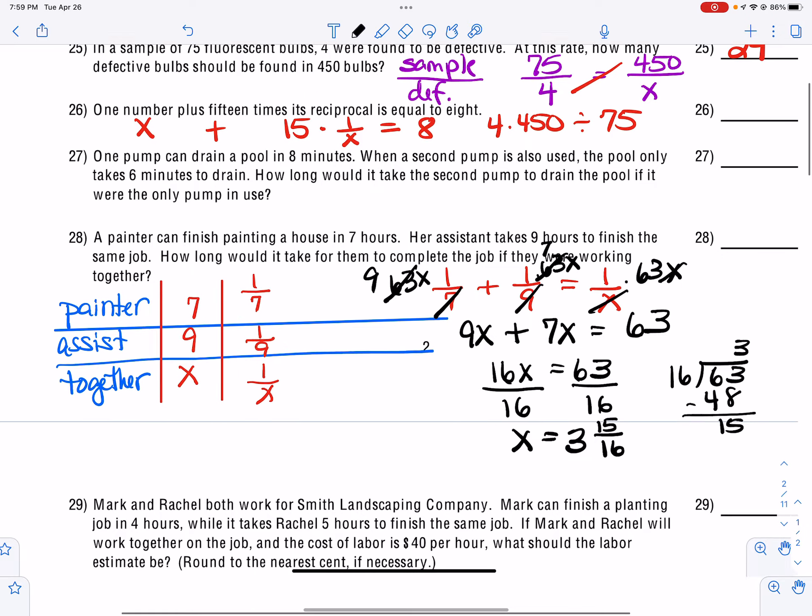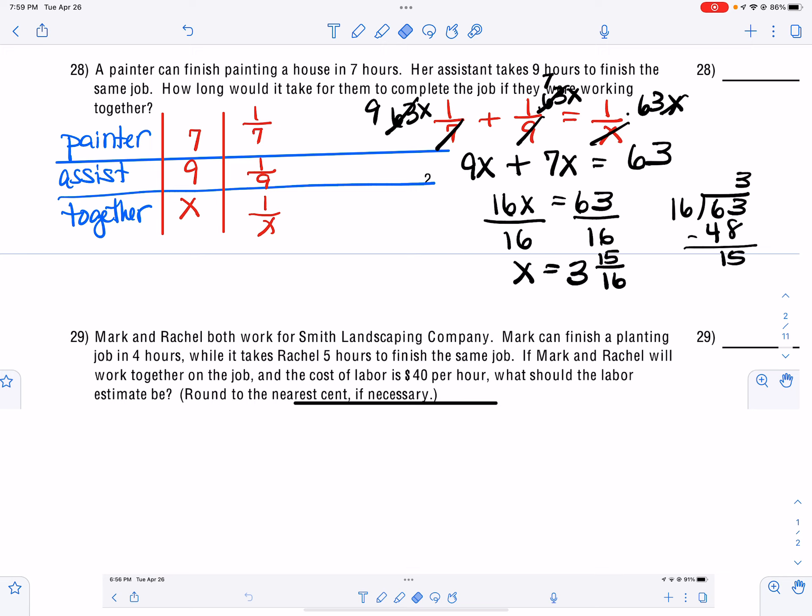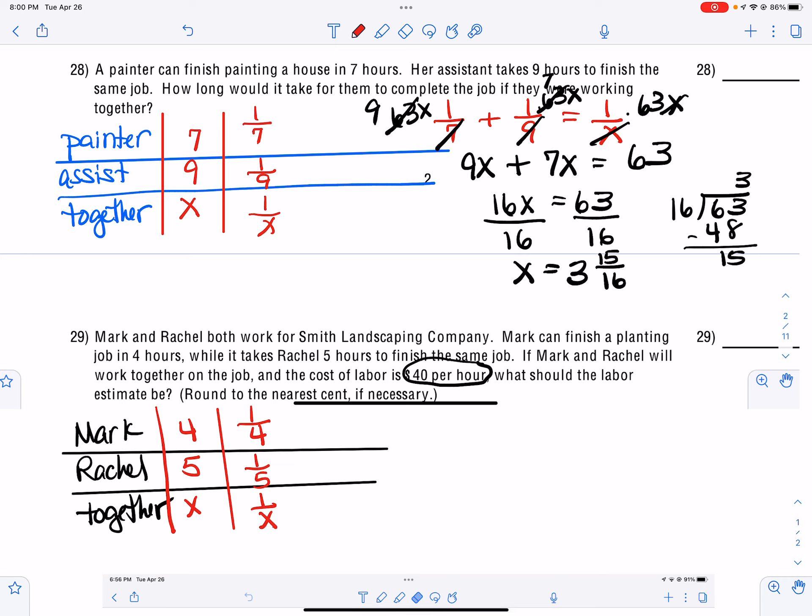So that finishes number 28. Now, when we get to number 29, they have one little added bonus here. And this added bonus is talking about how much it's going to cost. So first, we have to figure out what their time together on the job would be, and then we have to multiply that time by $40 an hour. So let's do Mark and Rachel and then together. So we have Mark can plant in 4 hours. Rachel can plant in 5 hours. And we want to know what it will take them together. So we put one-fourth, one-fifth, one over X. So one-fourth plus one-fifth is equal to one over X.